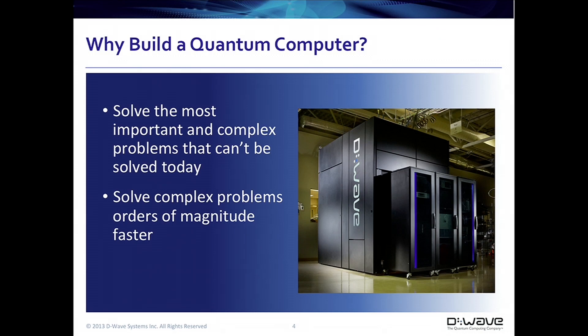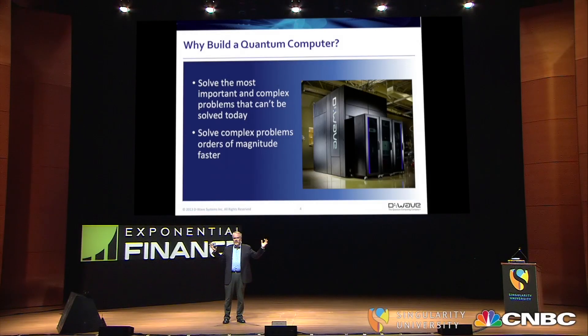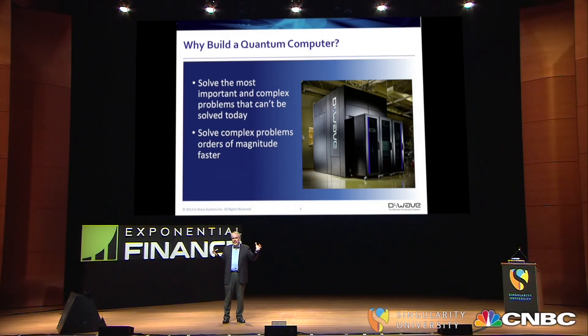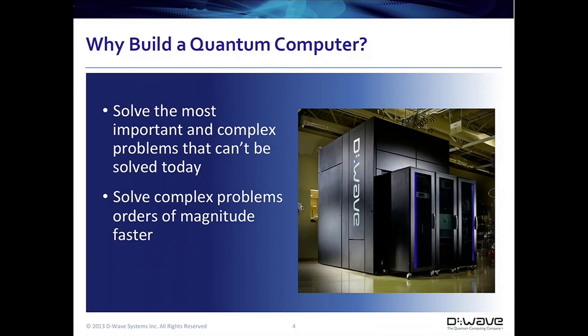The picture you see there is a D-Wave 2 system. It consists of a very large box, which has ultimately inside it a processor the size of your fingernail — a chip that is the quantum processor. The bulk of the machine is a refrigerator and some exotic machinery to bring the temperature down to very low temperatures so that quantum mechanical computation can happen.